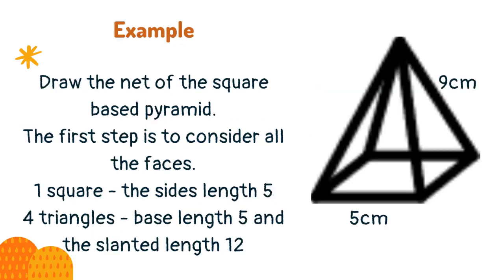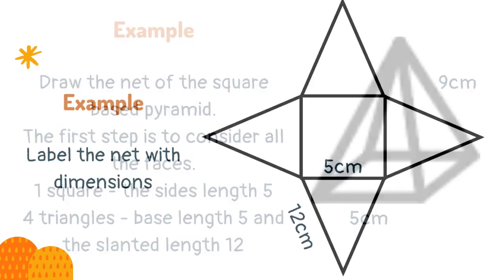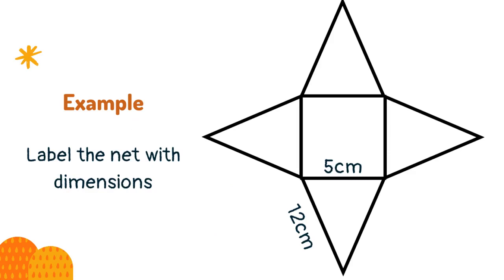For example, draw the net of the square-based pyramid. The first step is to consider all the faces. One square, the sides length 5, four triangles, base length 5 and the slanted length 12. You must make sure that you label the net with dimensions.